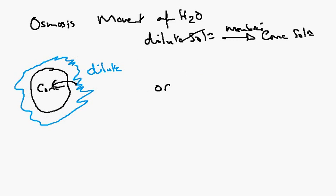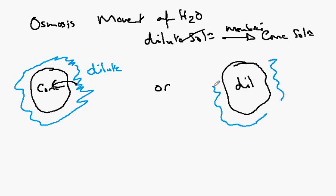Or, we can have the cell in which the contents are dilute in comparison to the surrounding fluid of the cell. In which case, the prediction according to the rule is that water will move from the dilute solution inside the cell in the cytoplasm to the concentrated solution surrounding the cell. This is the process of osmosis where water moves from a dilute solution to a concentrated solution.